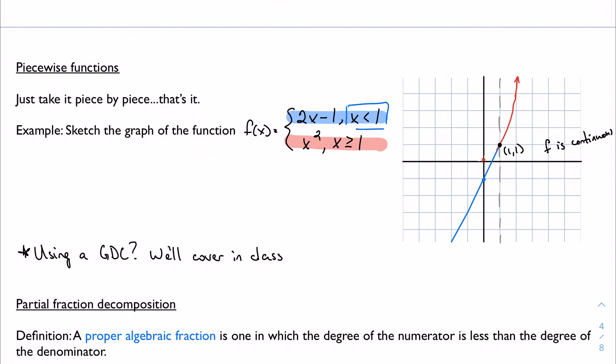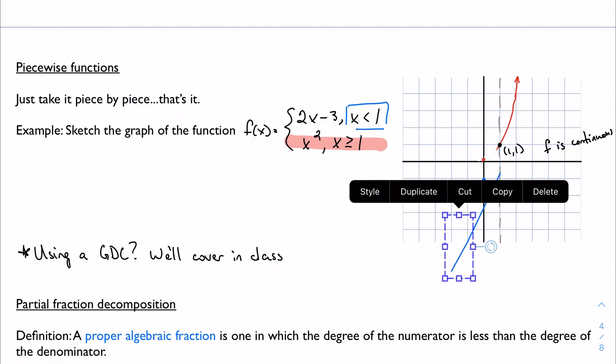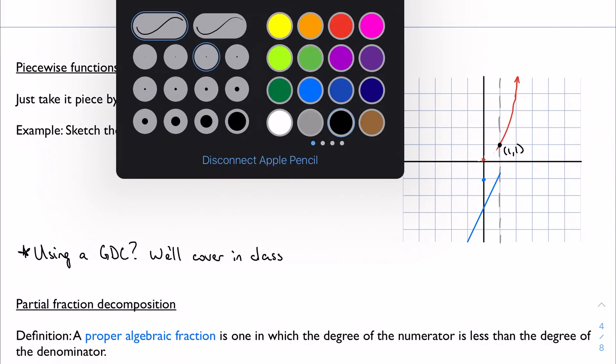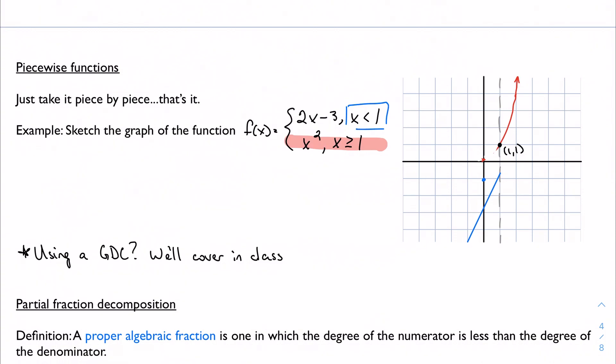But if I were to maybe change this function, just to kind of prove a point here, maybe I change this to -3. So, if I were to try to kind of take this piece and just slide it down. Yeah, there we go. We see that my function is no longer continuous.